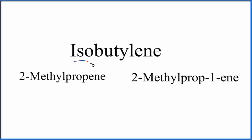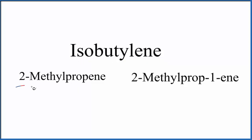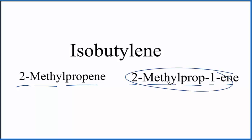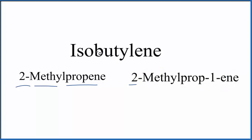Let's write the structure for isobutylene. So we have isobutylene — this is an older name. It's also called 2-methylpropene or 2-methylprop-1-ene. This is the preferred IUPAC name. But let's write it for isobutylene first.